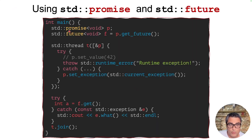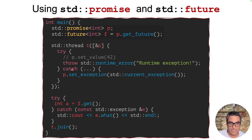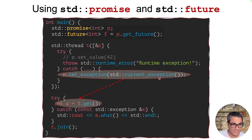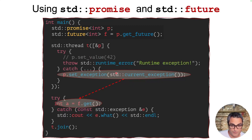Here is a more complete example. We define a promise and a corresponding future using get_future(), and we create a thread that captures the promise. Normally, this thread sends a value to the launcher thread. However, if an exception happens, we catch it in the catch block and send the exception using set_exception() and current_exception(). Remember that the main thread gets blocked until either set_value or set_exception is called. If set_exception was called, get() throws, we can catch the exception and handle it. So an exception that happened in the thread outside the call stack of main was successfully transferred using promise and future to the main thread's call stack.